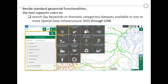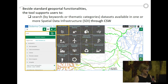Beside the standard geoportal functionalities, the tool supports users to search through keywords and through datasets available on multiple spatial data infrastructures. This is really important for us, because normally in the Piedmont region we have the Piedmont Geoportal, which contains data from the environmental agency. But it's not completely useful to merge the data between WMS layers published in different places. In our solution, we really merge together the functionality of different providers.